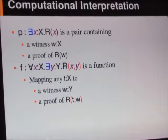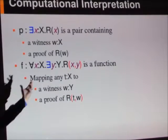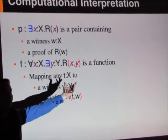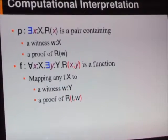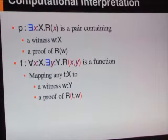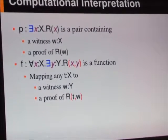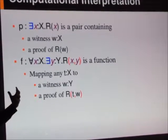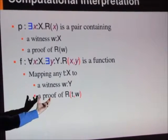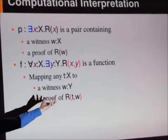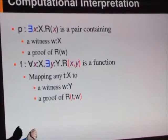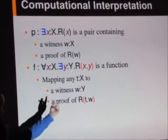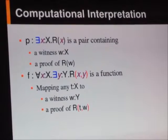And if we have a proof of for all X there exists Y, such that R of X, Y holds for some property R, then the computational interpretation of this is it's a function that maps any term T of type X to a witness W of type Y, and a proof that the relationship between the input and output that you want holds.